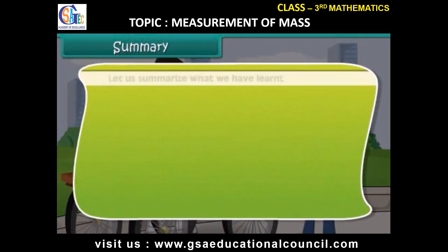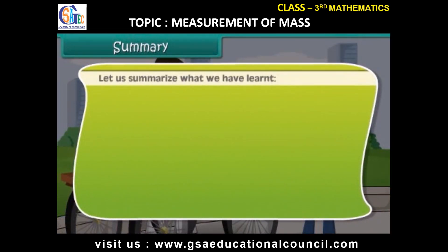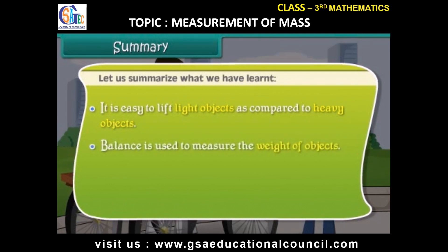Let us summarize what we have learned. It is easy to lift light objects as compared to heavy objects. A balance is used to measure the weight of objects. One kilogram is equal to 1000 grams.